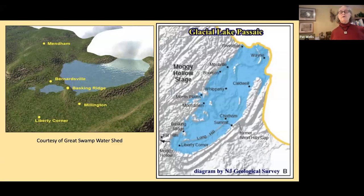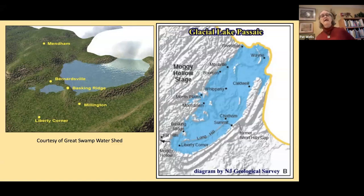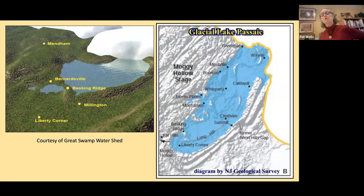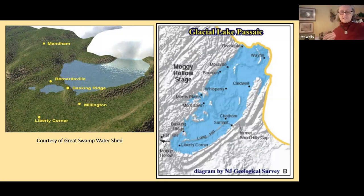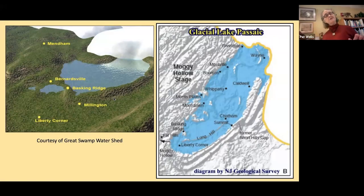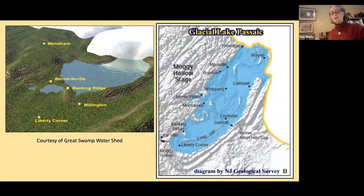In order to understand the human history of the swamp, we need to understand how it was created. We had three glacial incursions in northern New Jersey. The last one, the Wisconsin Glacier, melted about 23,000 years ago, forming Glacial Lake Passaic. It created this huge glacial lake, and you can see the size of it — it was enormous.